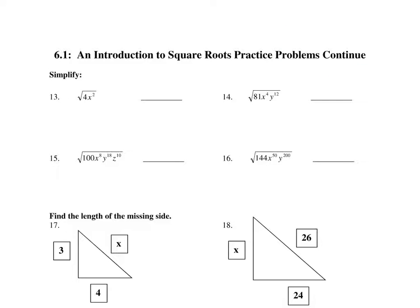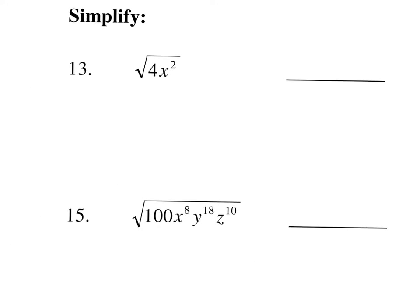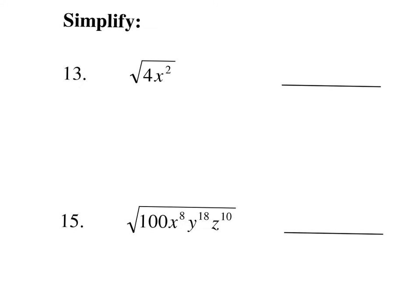When you have coefficients and exponents, you deal with the coefficient first. The square root of 4 is 2, because 2 times 2 makes 4. The square root of the variable is found by dividing the exponent by 2. 2 divided by 2 makes 1, so this is x to the 1st. We don't usually write the exponent of 1.